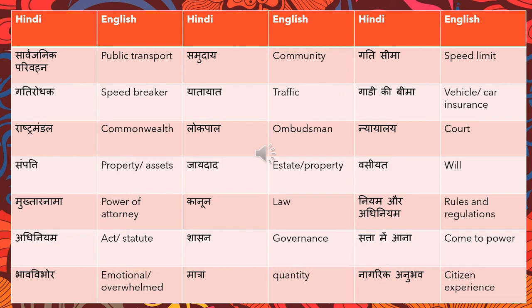The first word is sarvagenic parivahan — public transport. Sarvagenic means public and parivahan means transport. Samudai is community. Gati sema is speed limit — gati means speed and sema means limit. Gati rodhak is speed breaker — rodhak means breaker. Yat yat traffic.